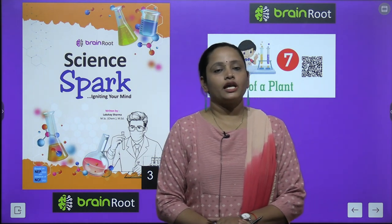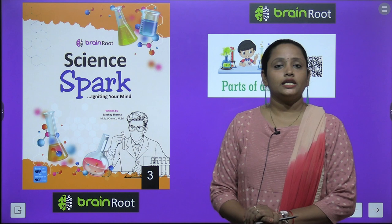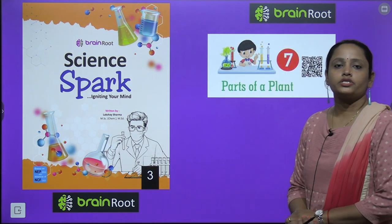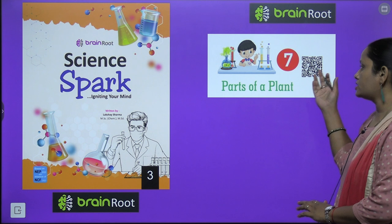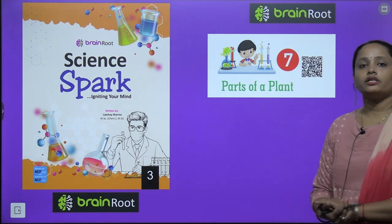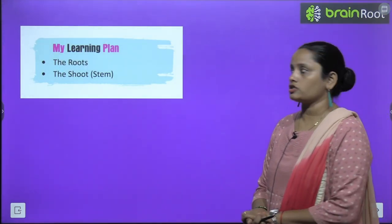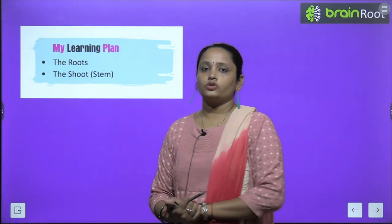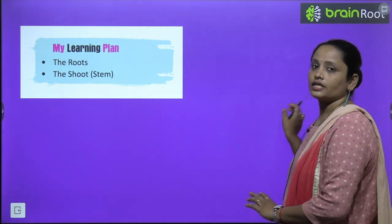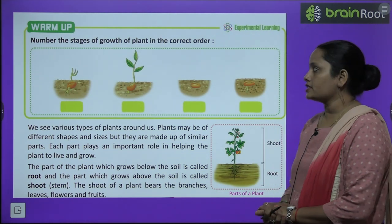Hello kids, welcome back. I am Vandana and we are learning science of class 3 by Brain Root series, and here is the book Science Spark. Today we are going to start chapter number 7 and the name is 'Parts of a Plant.' So in this chapter we are going to learn about the different parts of plants. We are going to learn about the roots and the shoot, which is the stem. Let's start with a warm-up exercise.